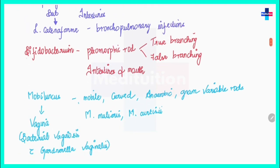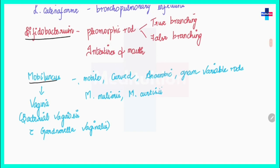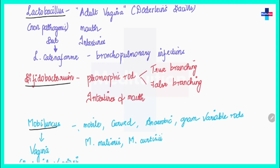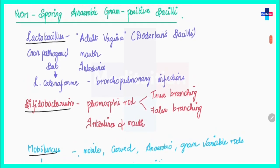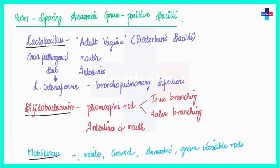In non-sporing anaerobic gram-positive bacilli we have Lactobacillus, Bifidobacterium, Mobiluncus, and Propionibacterium. Starting with Lactobacillus: a very important point is that it is present in the adult vagina. The Lactobacillus present in the adult vagina is called Döderlein's bacilli. This is actually non-pathogenic — in the adult vagina, Lactobacillus forms the healthy microbiota.